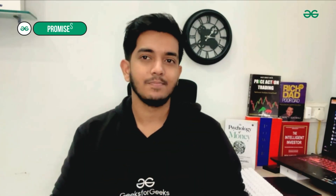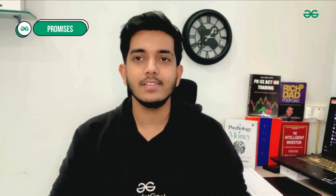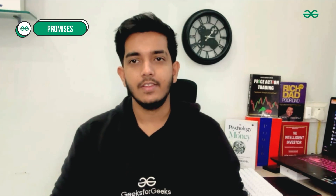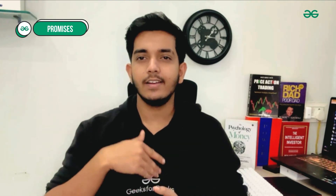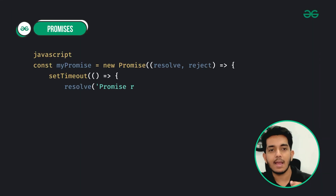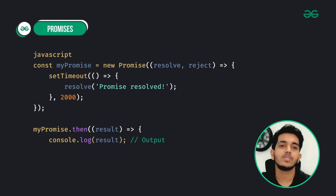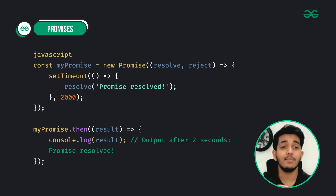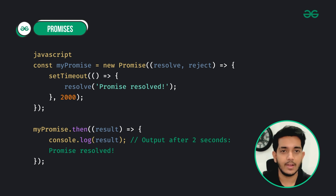Number six is promises. Promises represent the result of an asynchronous operation and are used to handle asynchronous code. In this basic example, myPromise resolves after two seconds, and the dot-then method is used to handle the resolved value.